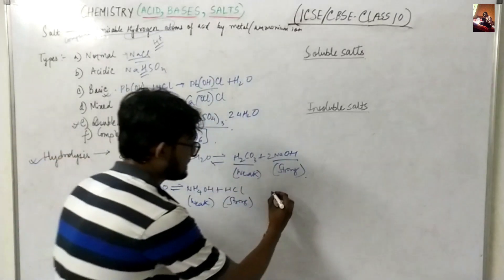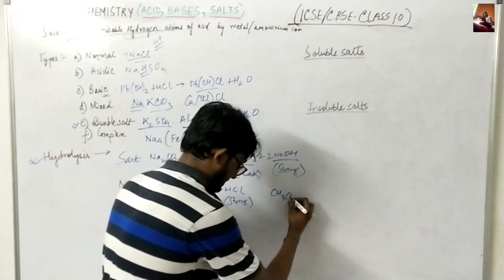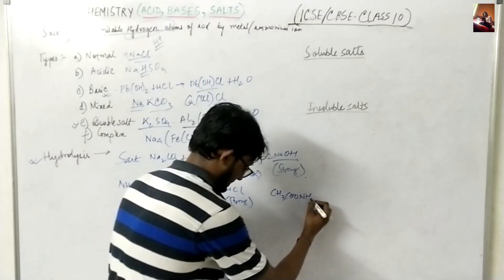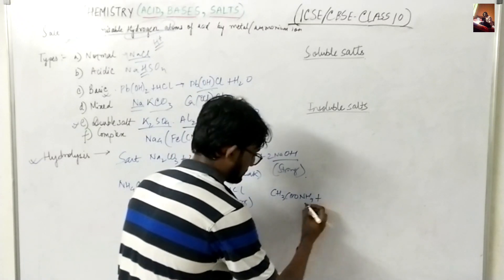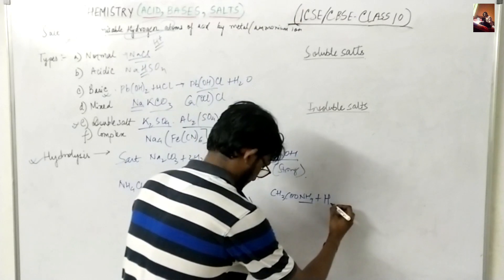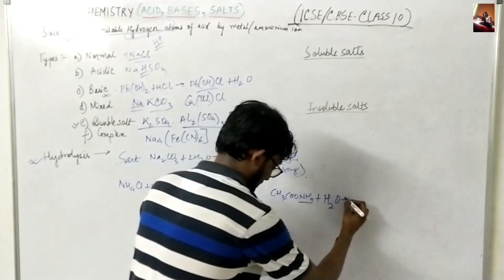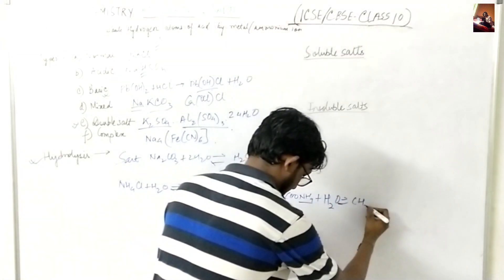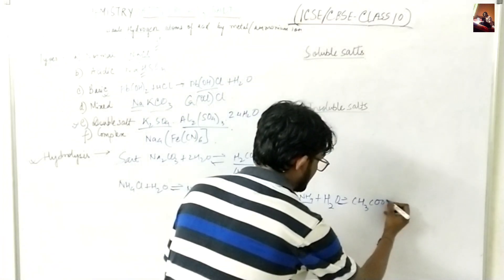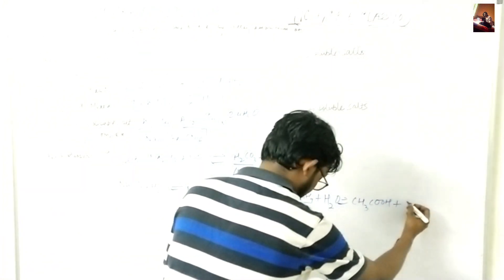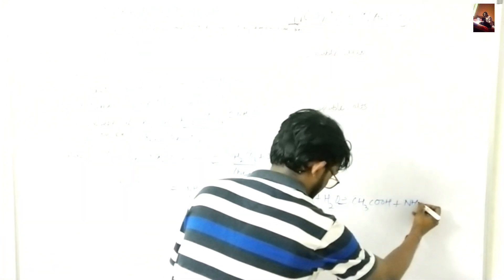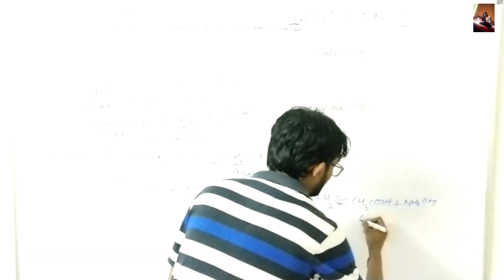And I will give you another last example. CH3COONH4, this is like salt, plus H2O will give you CH3COOH, acetic acid, and NH4OH. So both these two are weak.